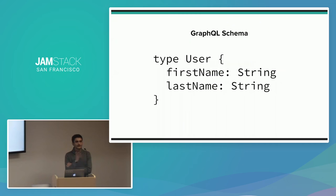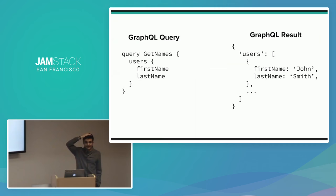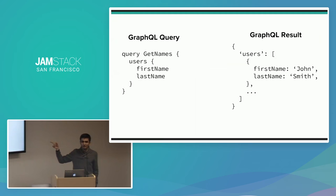GraphQL is inherently based on the idea of schemas. You define these objects — for example, a user with a first name and last name, both strings. Clients can fire queries against these schemas. On the left you'd see a GraphQL query asking for users' first and last names; on the right, the GraphQL result — basically the same structure but as a JSON object. They look the same because they're both trees of selection sets and fields.